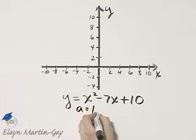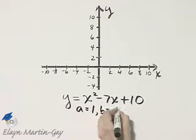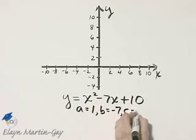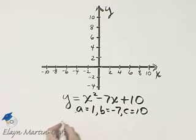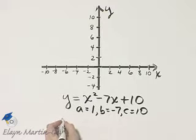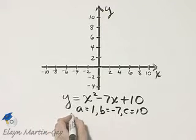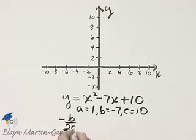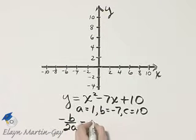Notice here a is 1, b is negative 7, and c is 10. And we can use that formula that the x value of the vertex of the parabola is negative b over 2a, which in this case is negative, a negative 7, over 2 times a is 1.